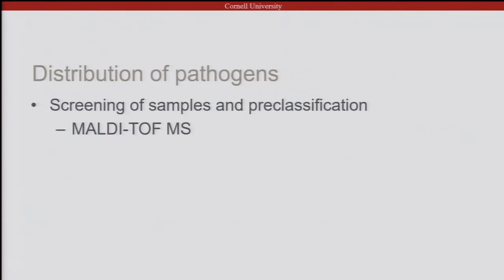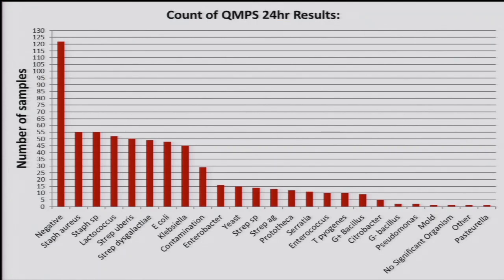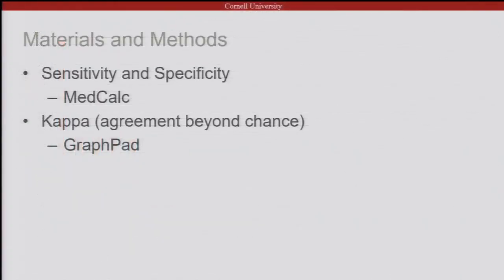Previously identified by MALDI-TOF, the most common pathogens found are shown on this graph, including no-growth at about 120 samples, Staph aureus at 55, Staph species, Lactococcus, and some other pathogens. Sensitivity and specificity were calculated by MedCalc, and kappa agreement beyond chance was calculated using GraphPad to analyze the data.